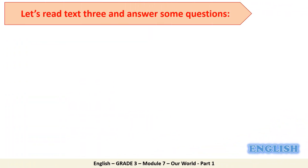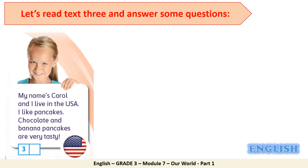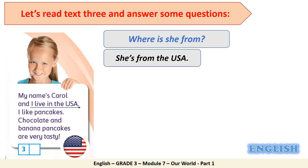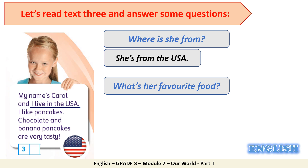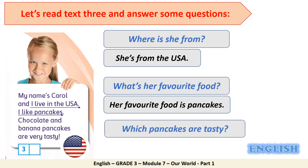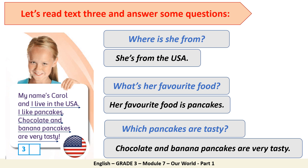Now let's move to the third text and answer some questions. Look at the picture. Number one — where is she from? Excellent — she is from the USA. Number two — what's her favorite food? Her favorite food is pancakes. Number three — which pancakes are tasty? Very good — chocolate and banana pancakes are very tasty. Wonderful job, my dears!